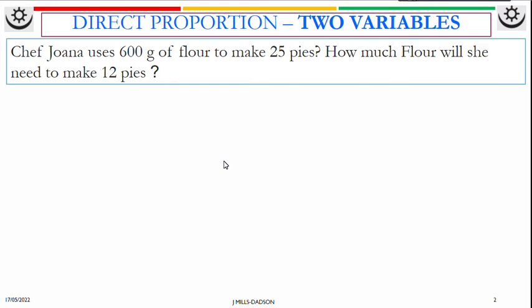Okay, so the first example is two variables, direct proportion. Chef Joanna uses 600 grams of flour to make 25 pies. How much flour would she need to make 12 pies?